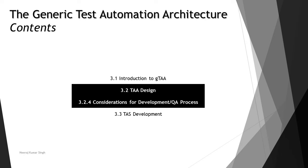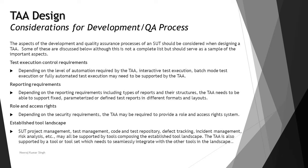We have been talking about a lot of considerations in Chapter 3 with respect to TAA design. There are a few things which we need to consider in terms of considerations for the development and QA process — managing requirements, understanding execution control, reporting methods, different roles and responsibilities, protocol, access rights, and what tools will assist in managing all these things.